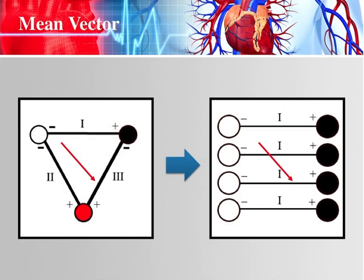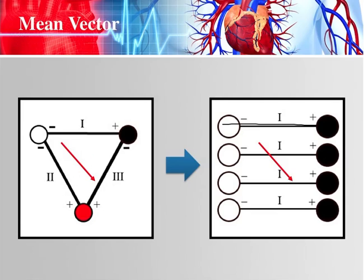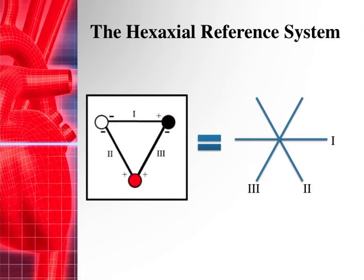Your heart is nowhere near the shoulders, so how does Lead I pick up electrical activity from down in the heart? It looks at it in a parallel fashion — it picks up that wave of depolarization and the mean electrical vector based on that. Knowing this, you can move all of your leads so they intersect in the middle. We've dragged Lead I down from its original position.